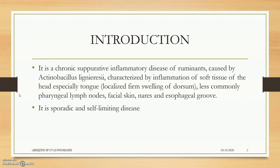It's a chronic suppurative inflammatory disease of ruminants, and sometimes horses, caused by Actinobacillus lignieres, characterized by inflammation of the soft tissue of the head — mainly the dorsum of the tongue, and also the ventrum of the tongue. Less commonly, pharyngeal lymph nodes, facial skin areas, and esophageal groove. It is a sporadic and self-limiting disease.